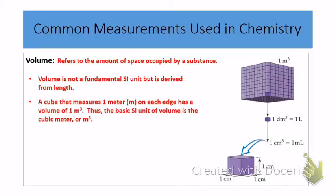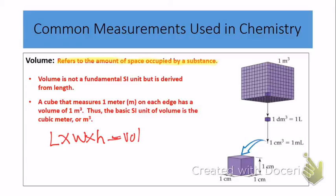What about volume? Remember from Part 1, there is no fundamental SI unit for volume at all, so the volume unit must be derived. Volume refers to the amount of space that is occupied by a substance. Volume can be thought of as being three-dimensional — when you find the volume of a cube, you take the length times the width times the height, and that gives you the volume.